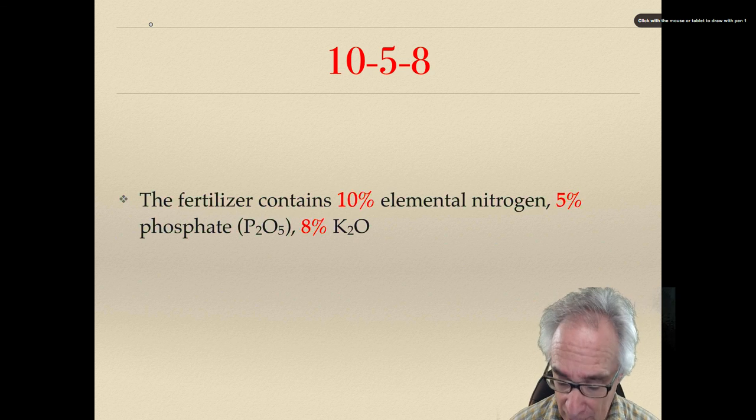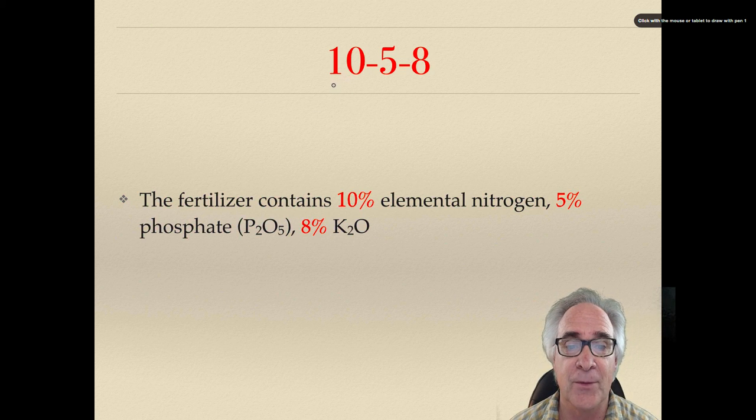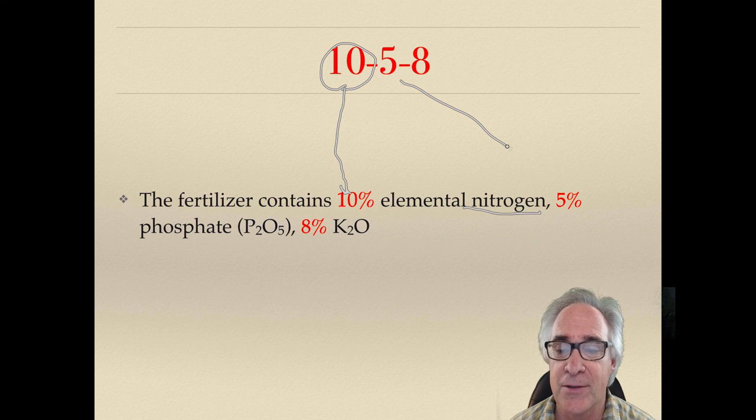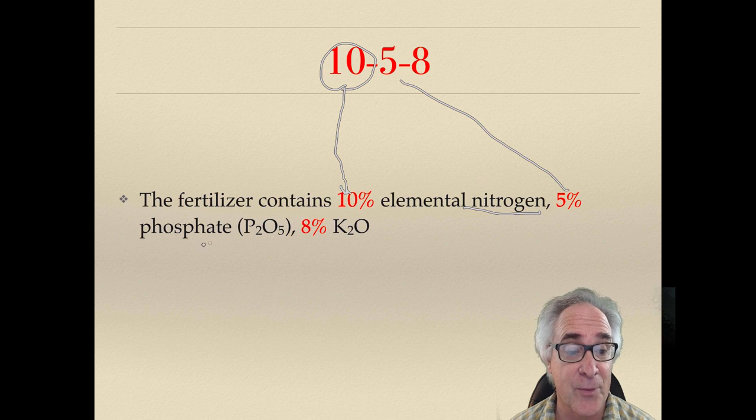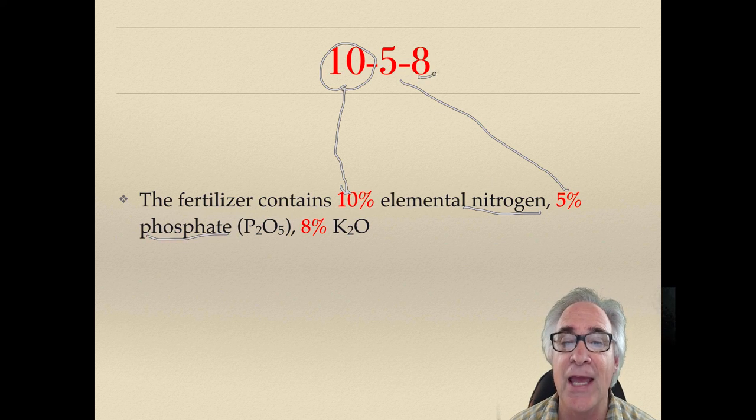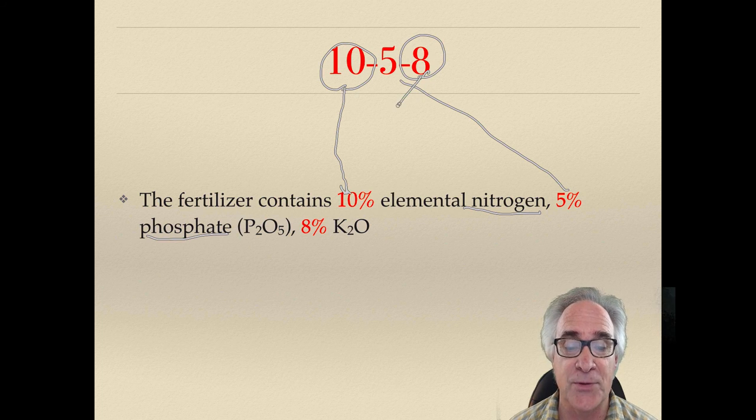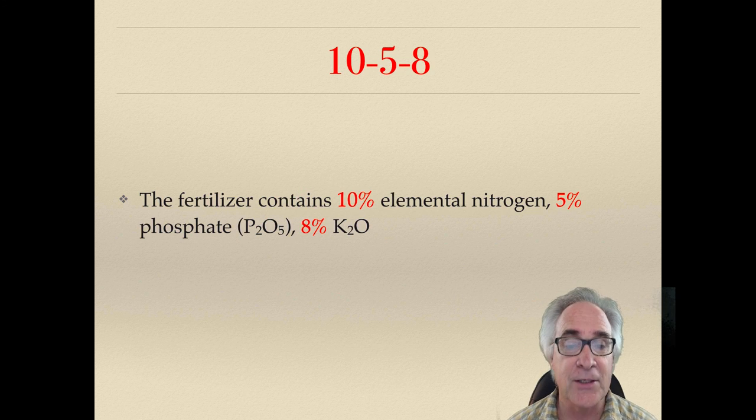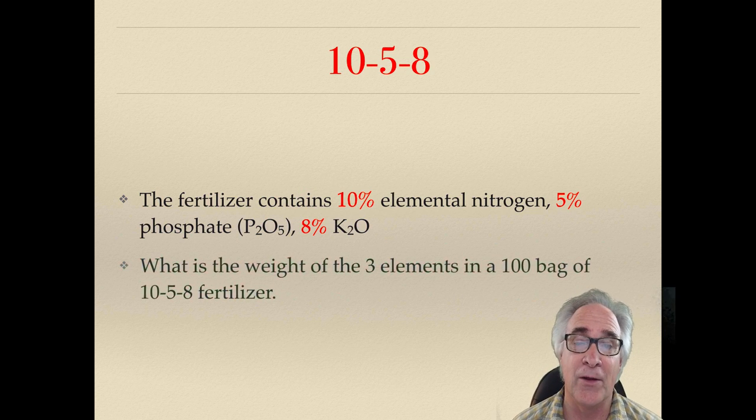So when we look at this, number 10 is giving us the percentage of nitrogen. 5 means 5% of phosphate. And then of course when we get to 8, it really means potassium and this percentage. In this case, 8%.